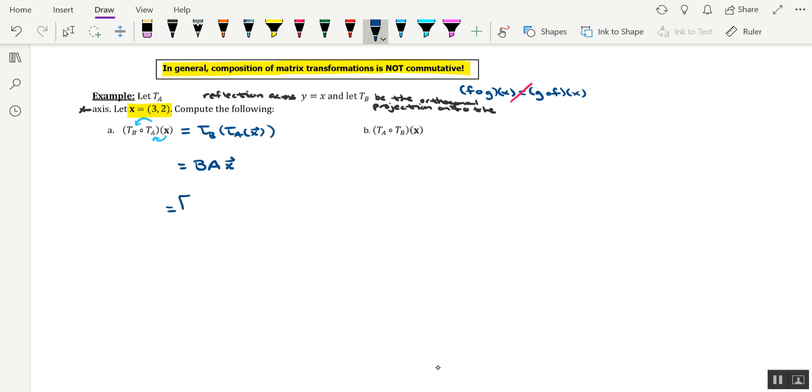Now the standard matrix for b. Remember we have to do the orthogonal projection onto the x-axis. That matrix looks like this. And then t sub a's standard matrix should represent the reflection across y equals x. That's 0, 1, 1, 0. And then we also have the input vector x with components or entries 3 and 2.